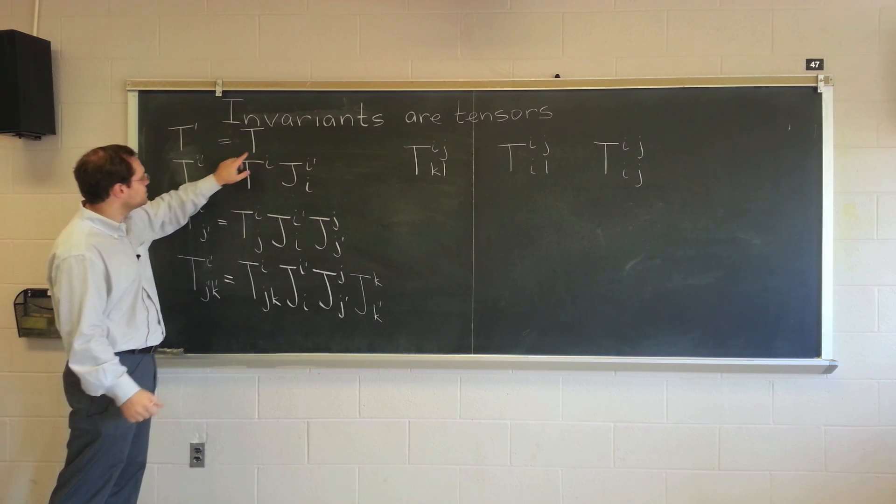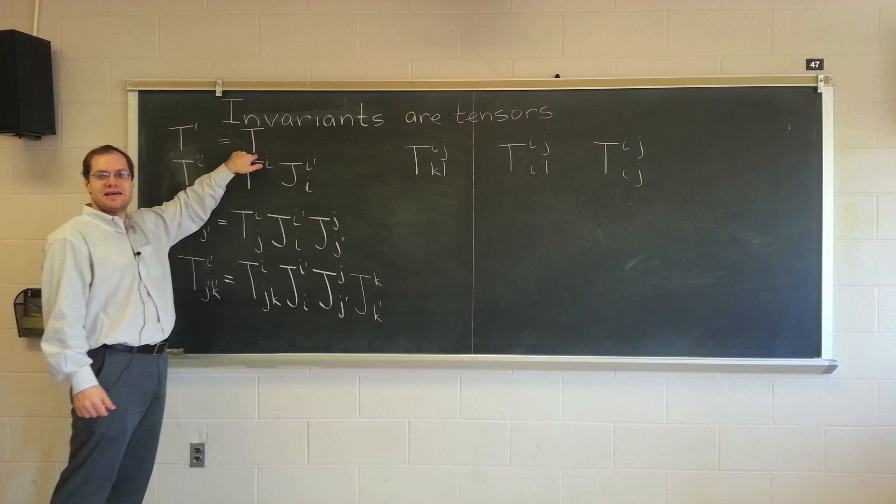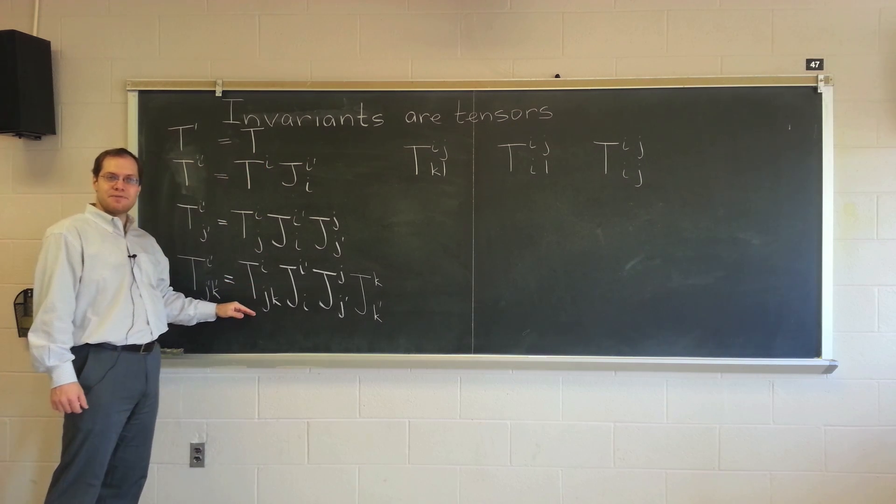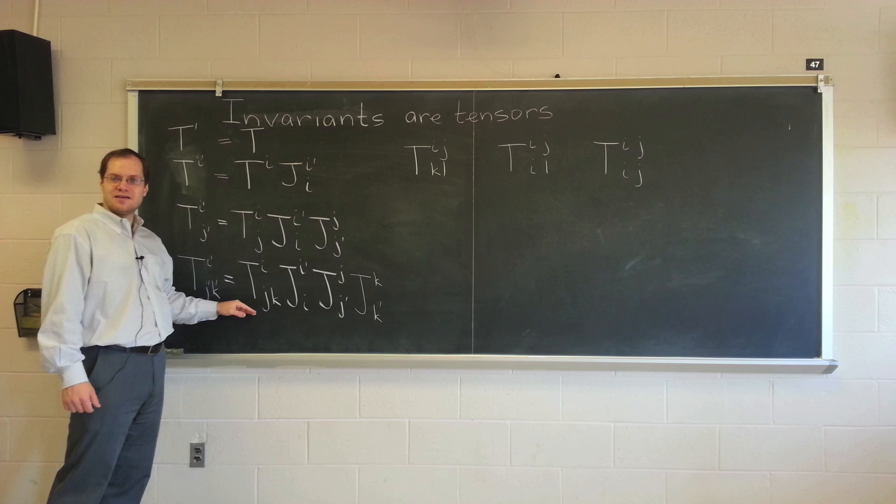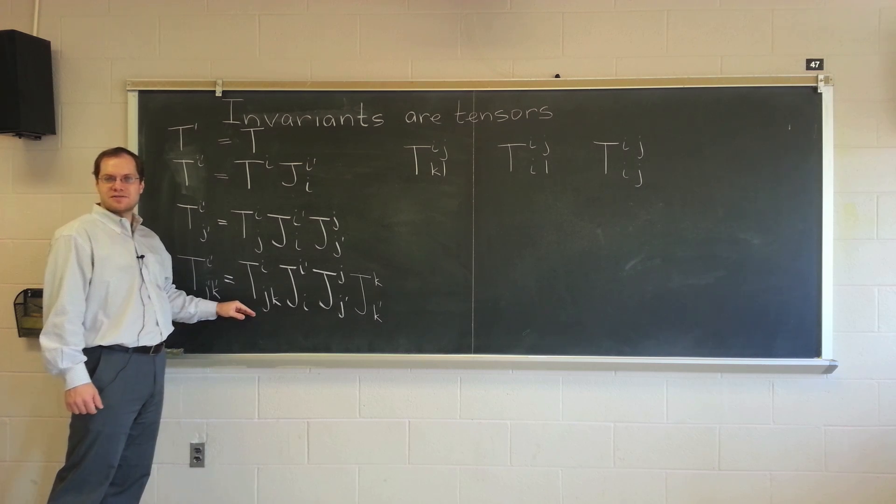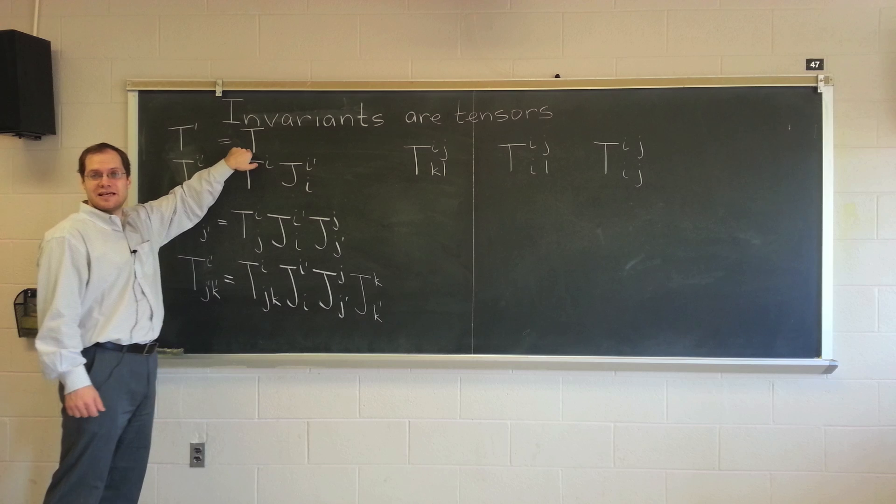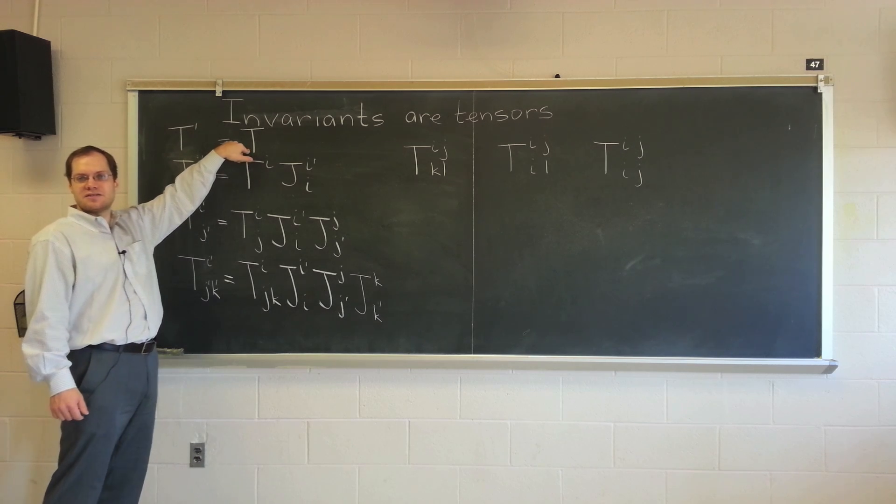And because it gets no Jacobians, it's an invariant. It means you get the same value in all coordinate systems. All of these expressions imply that you get different values in different coordinate systems. But because there are no indices and therefore no Jacobians, it means the same value in all coordinate systems.